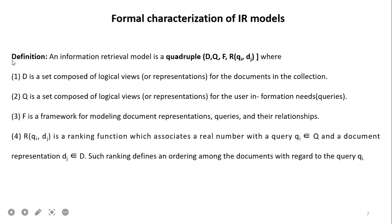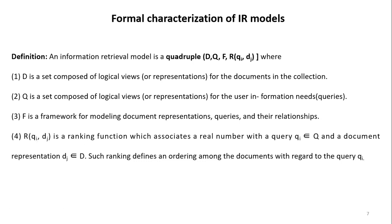Formal Characterization of IR Models: an information retrieval model is a quadruple having four fields — D for document, Q for query, F for framework, and R for the retrieval or ranking function. D is the set of composed logical views for documents in the collection; Q is the set of composed logical views for user information needs, i.e., queries; F is a framework for modeling document representation, queries, and their relationship using different formulae; and R is a ranking function that associates a real number with query QI and document DJ, defining an ordering among documents with regard to query QI, retrieving documents according to their relevance value.